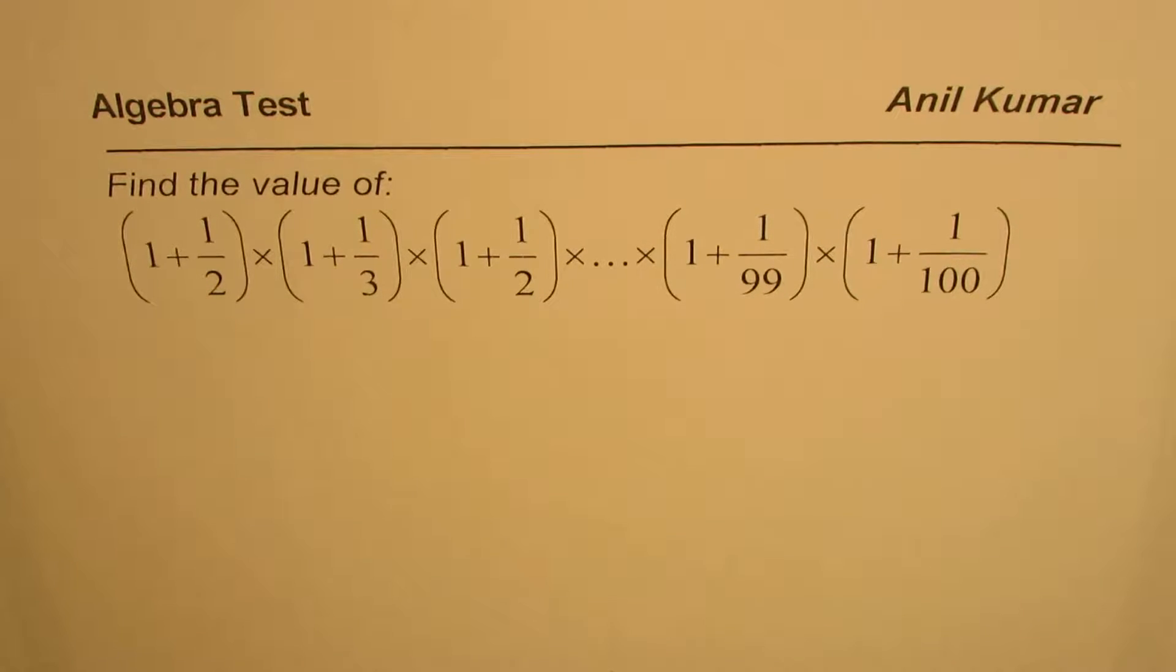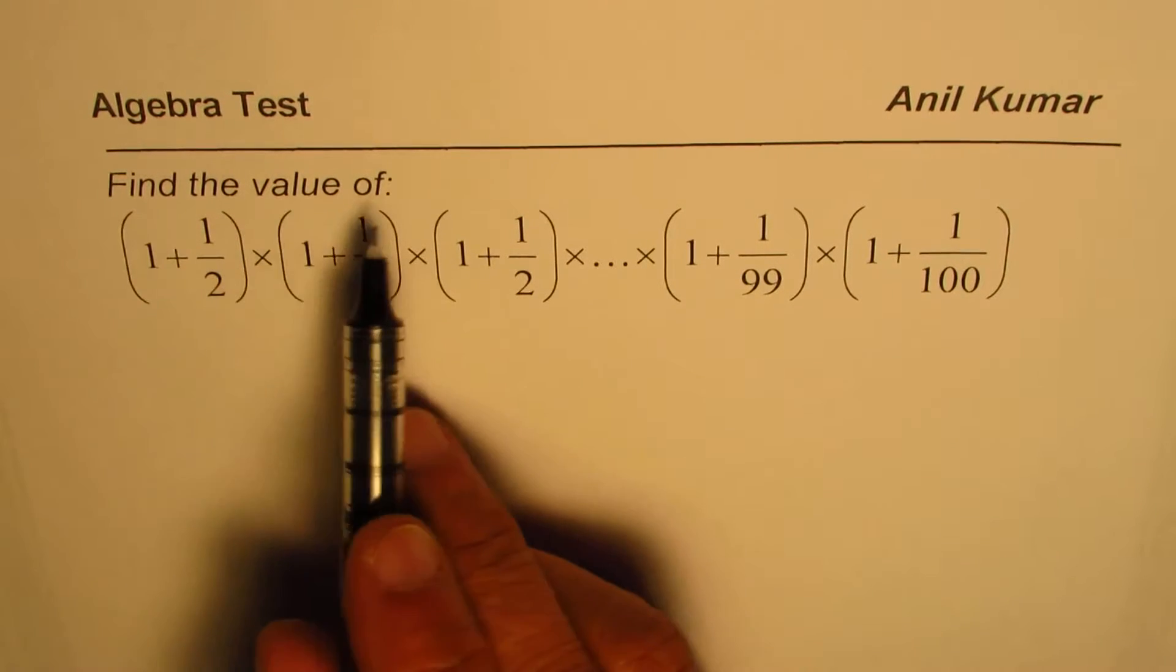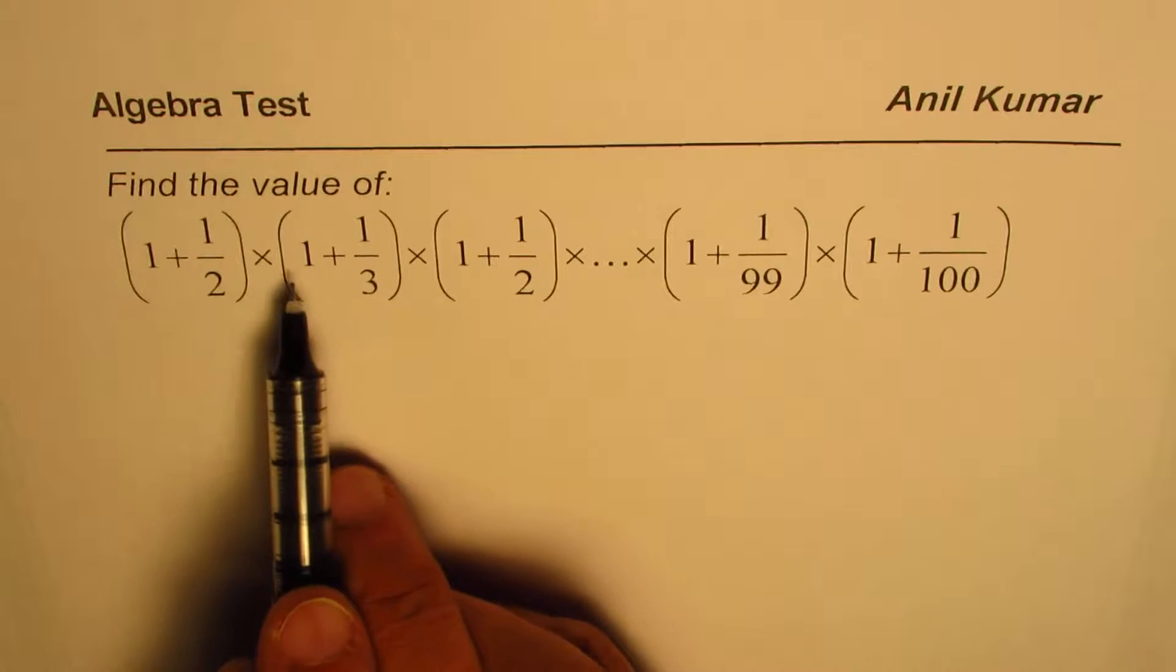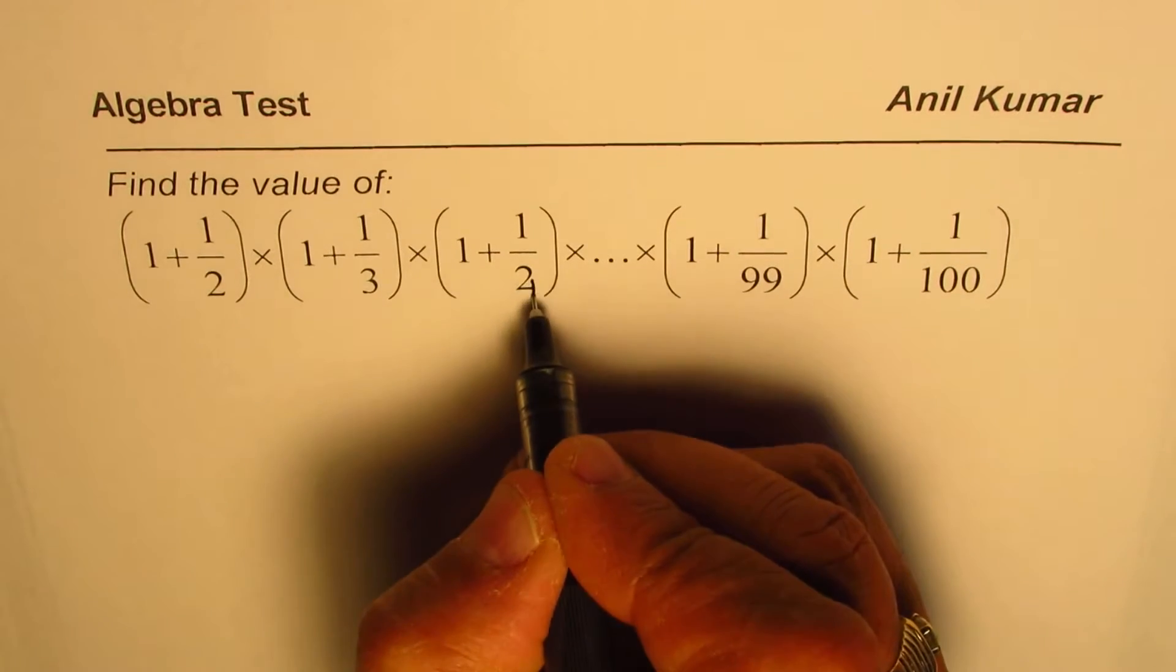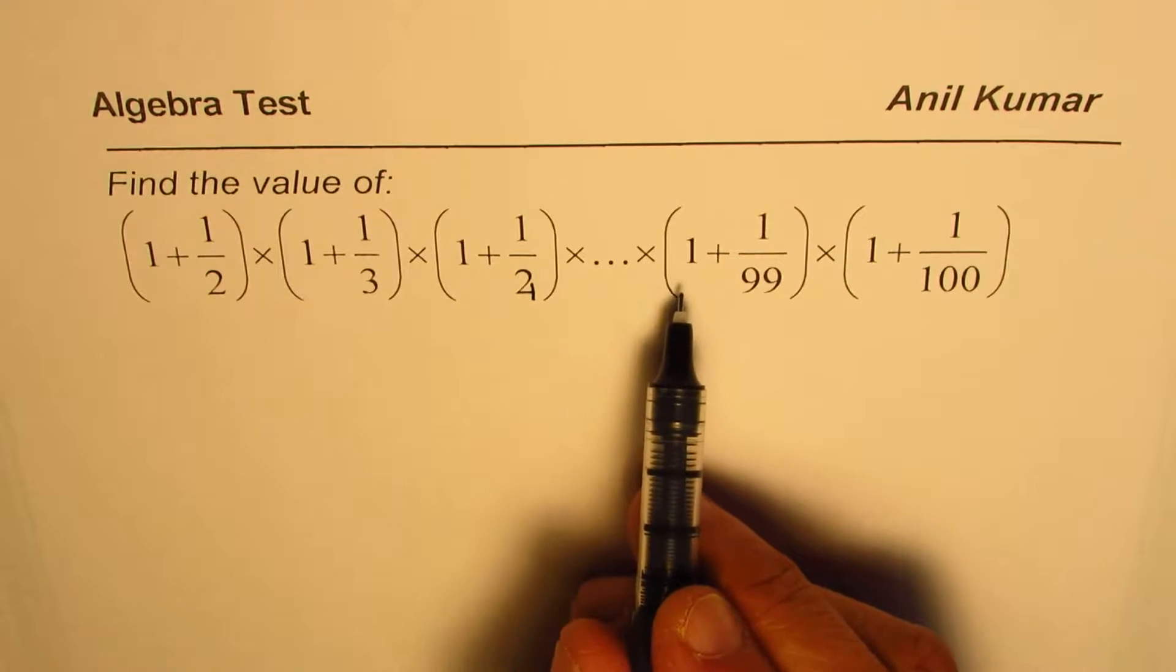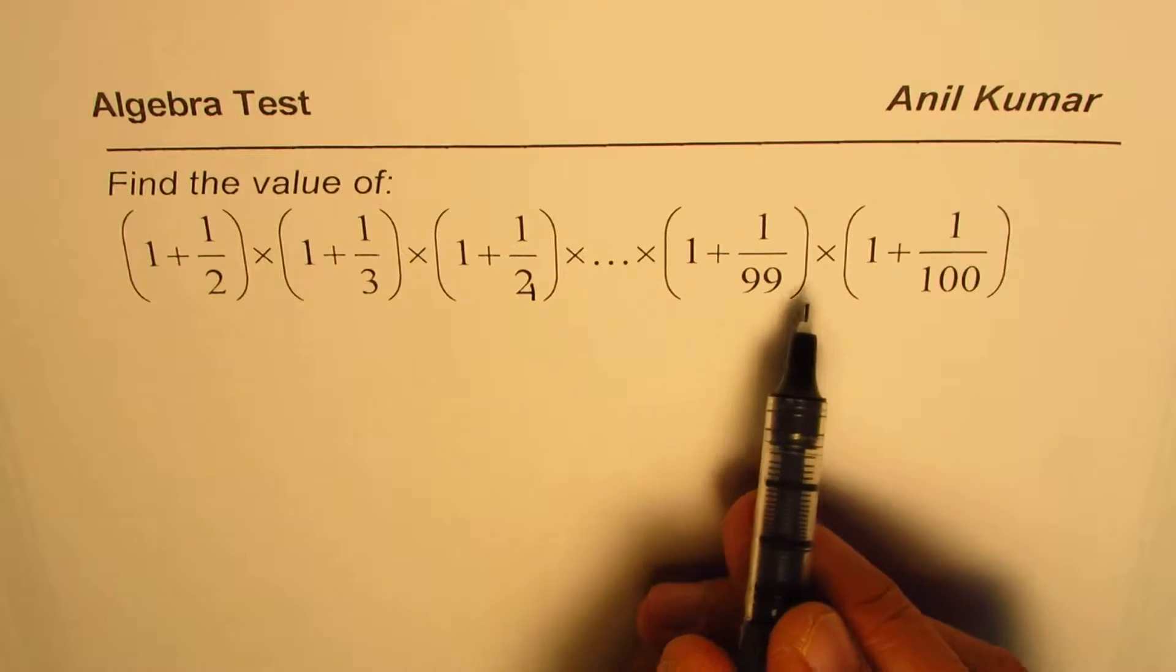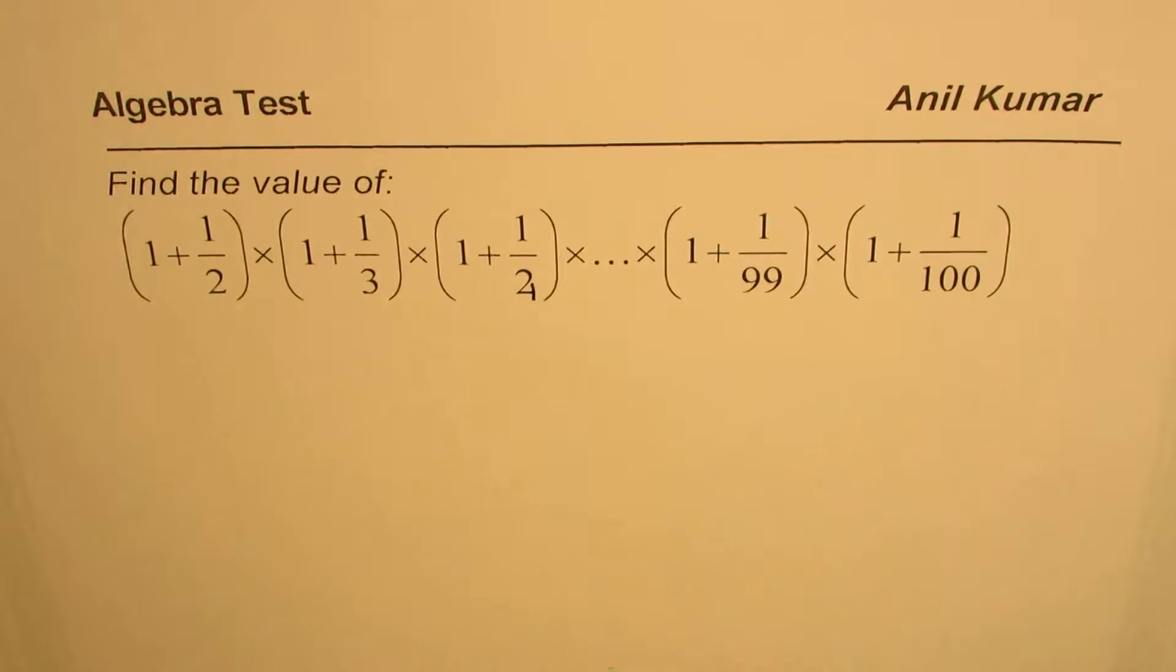I'm Anil Kumar sharing with you a very interesting question from a test paper on algebra. Find the value of one plus one-half times one plus one over three times one plus one over four, and so on, times one plus one over ninety-nine times one plus one over one hundred.